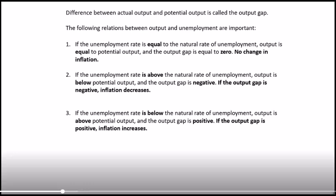If the unemployment rate is above the natural rate, output is below potential output and the output gap is negative — unemployment is higher, so output will be below potential, and with a negative output gap we have a decrease in inflation. Conversely, if the unemployment rate is below the natural rate, output is above potential, the output gap is positive, and inflation will increase.